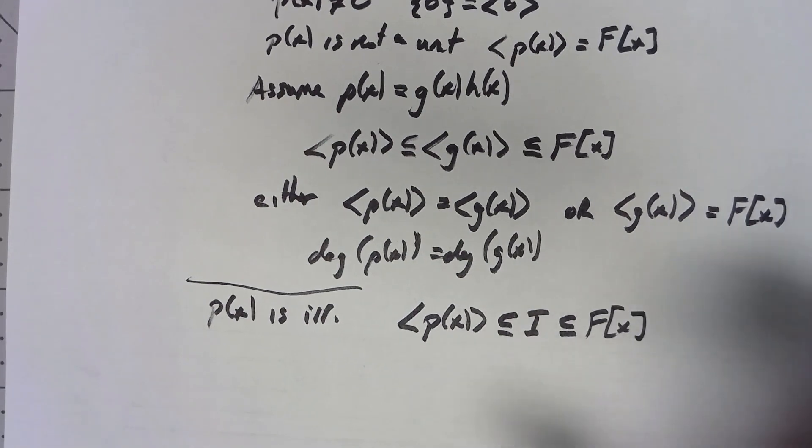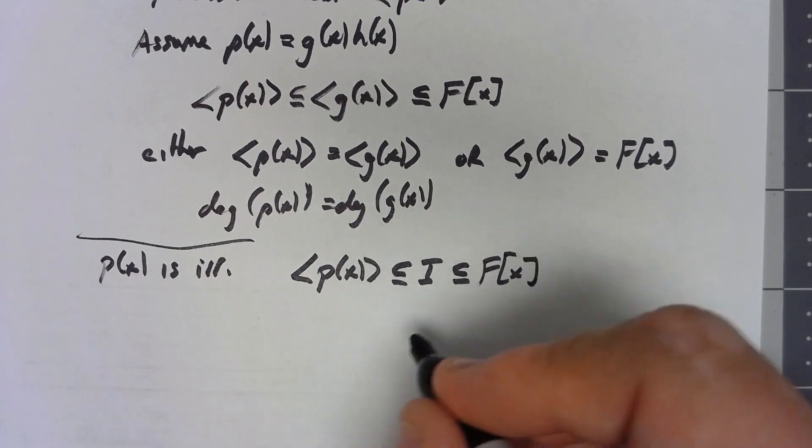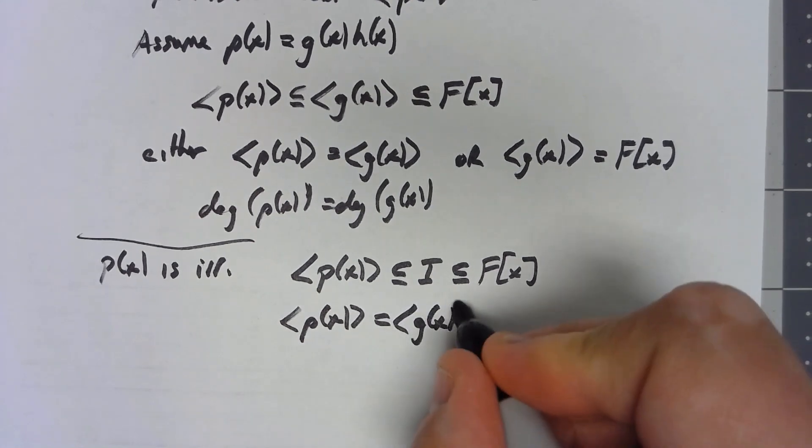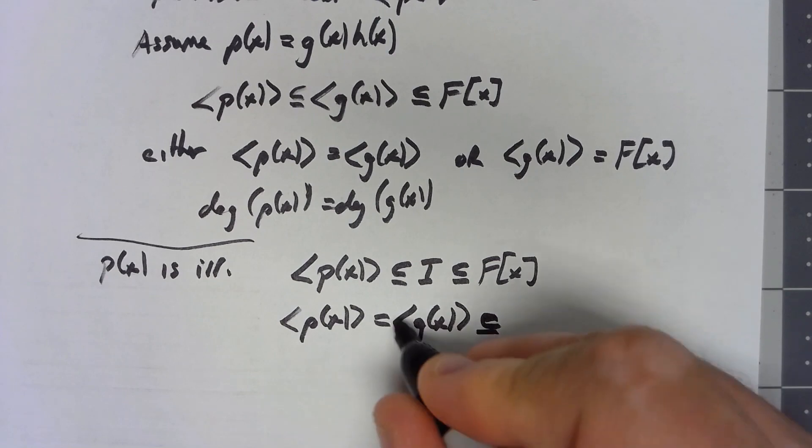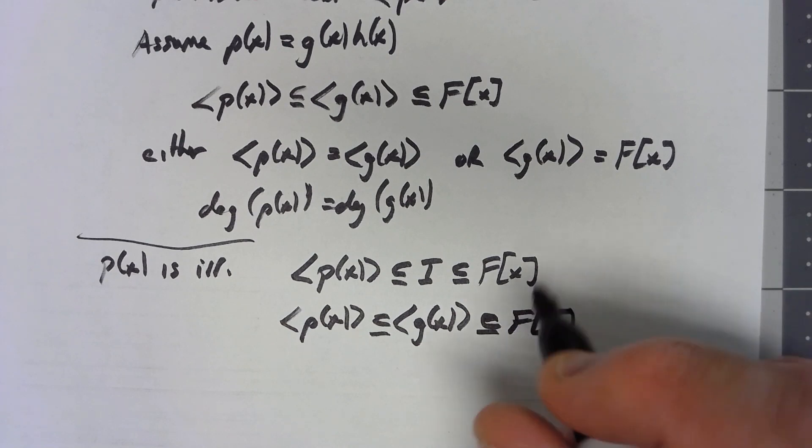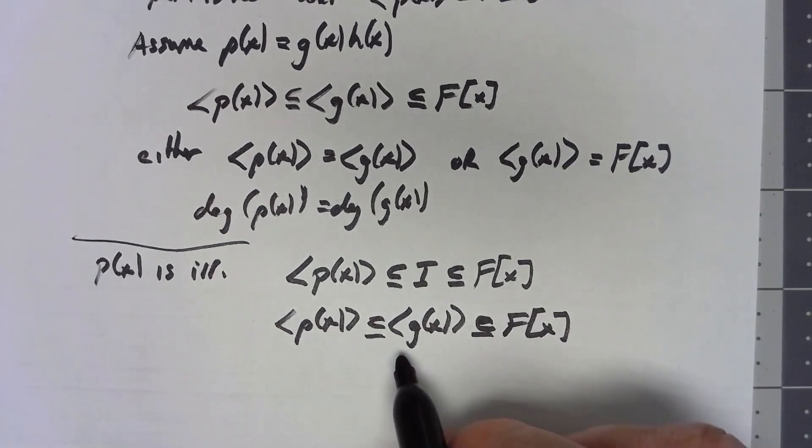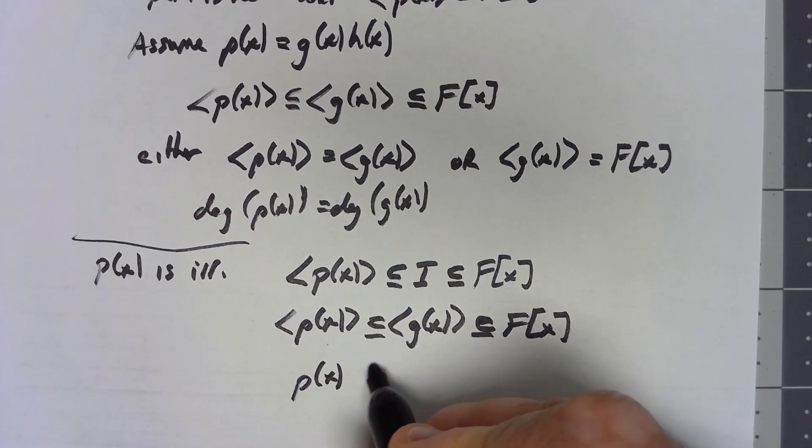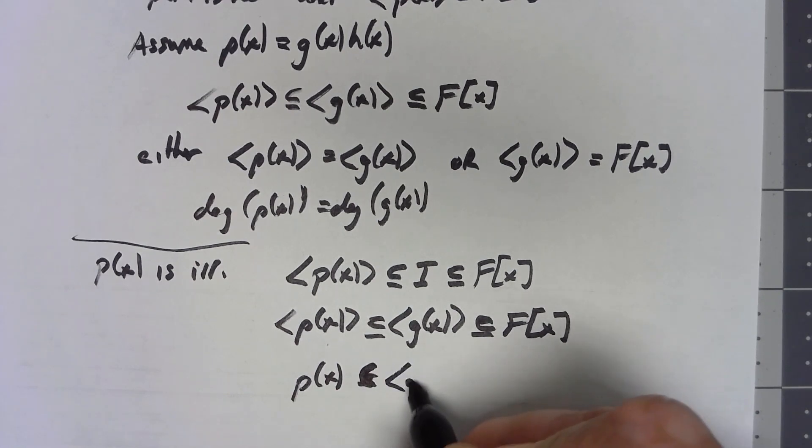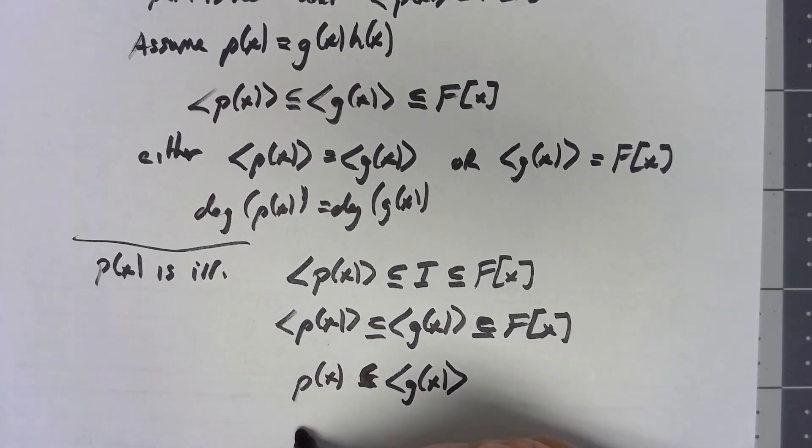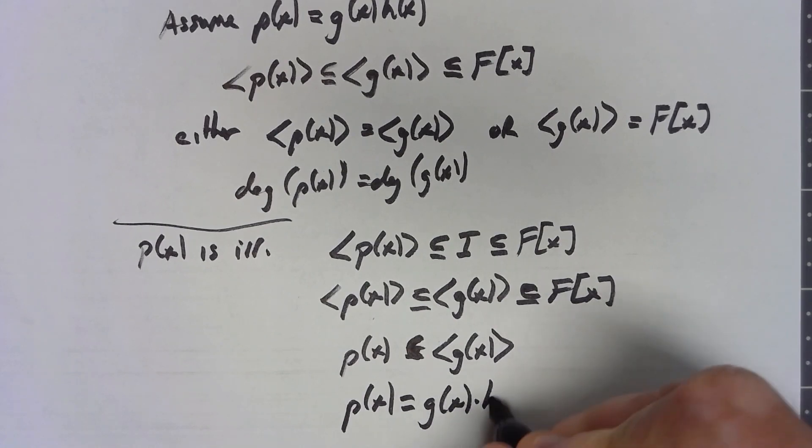Now, we know that we're in a principal ideal domain. So that must mean that that ideal here is generated by some polynomial. But then that must mean, since this thing is a subset of this, specifically, that polynomial is contained within g(x).